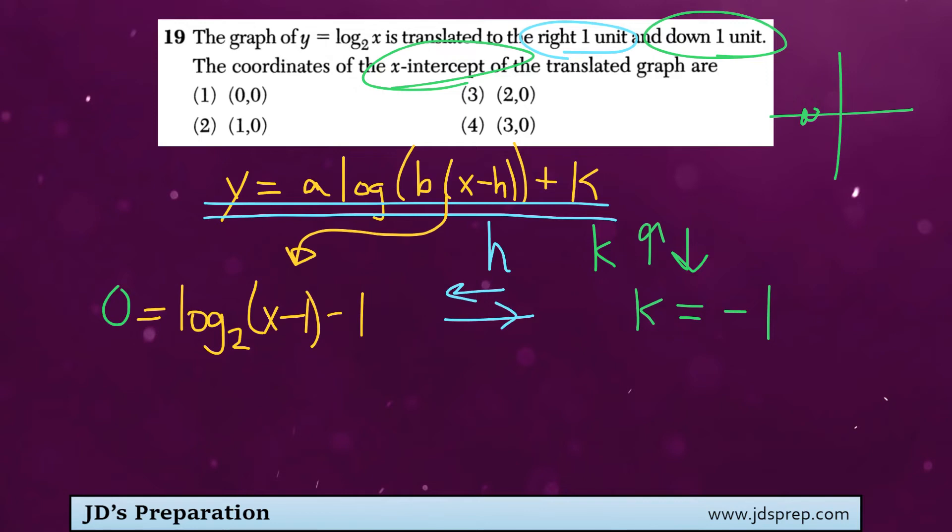So the first thing I'm going to do is add 1 to both sides of the equation, canceling that out, and what we'll have is 1 equals log base 2 of x minus 1.